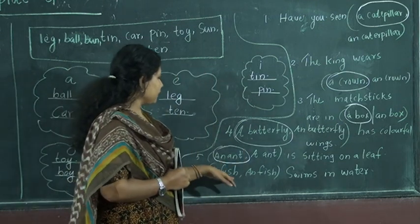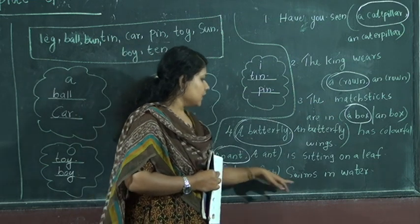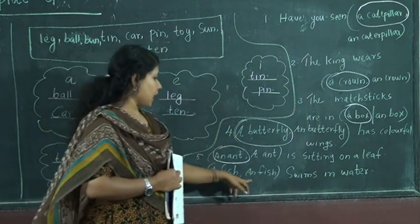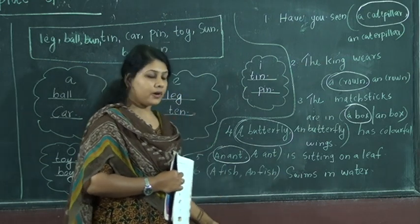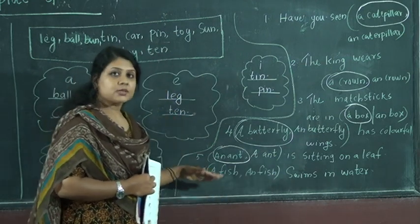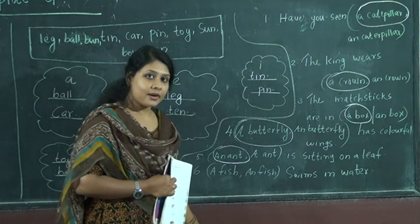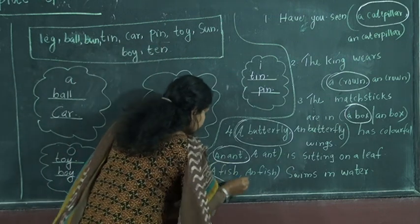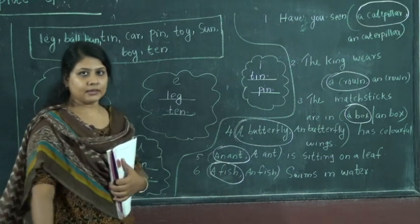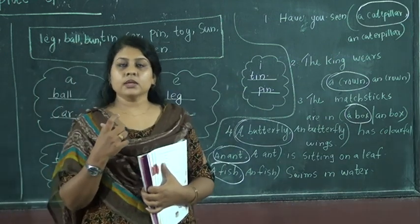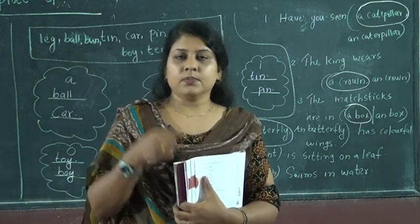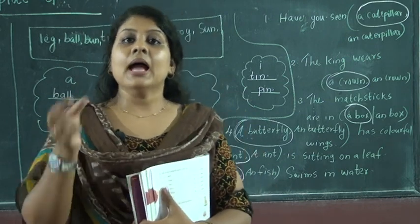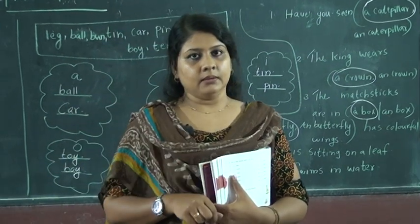Last one: A fish or an fish swims in water. First letter F is not a vowel, so A fish is the right one. Circle that word. Remember: A is used before naming words that do not begin with a vowel, and AN is used before vowels.